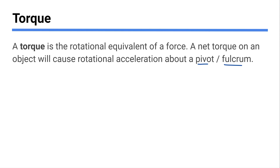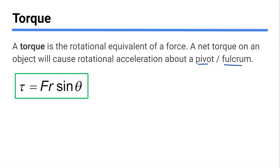Whenever we're rotating, we're rotating about or around something — some point. We call that the pivot point or the fulcrum. So picture trying to make something rotate. What physics things do you have to do to make that happen? Well, you need to push it. And also it matters where you do the pushing.